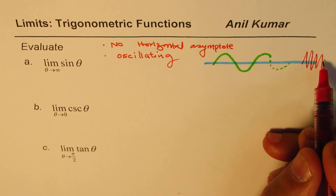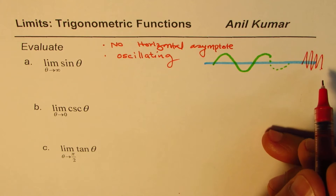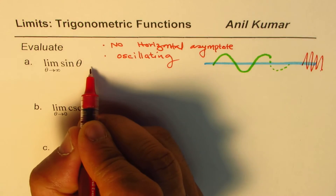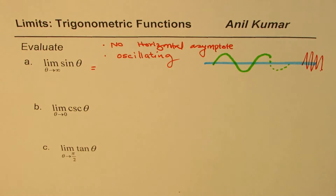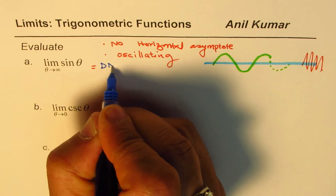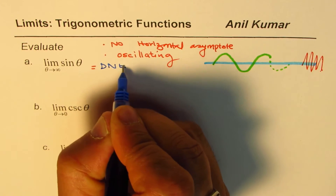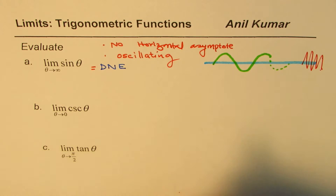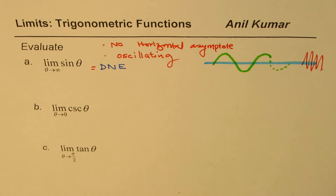you're not sure at infinity where you will be. So in this case, the limit does not exist. We can safely say the limit does not exist since we are not sure where the function will be when theta approaches infinity. I hope that part is very clear.